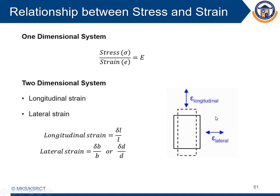In a two-dimensional system, we can measure the change in dimension in perpendicular directions. One direction may be increased, meanwhile the other direction will be decreased. That direction in the application of load will be called longitudinal strain. The strain calculated in the direction perpendicular to the application of load is called lateral strain. Increase in length by original length is longitudinal strain; change in breadth or diameter by original breadth or diameter is lateral strain.